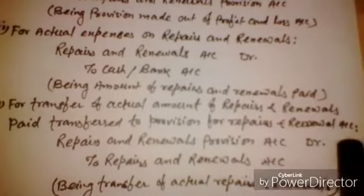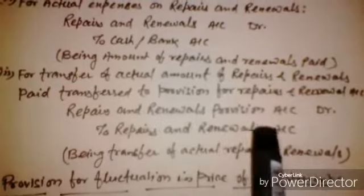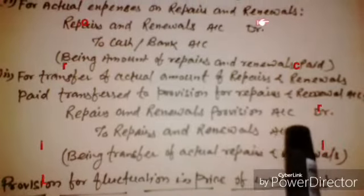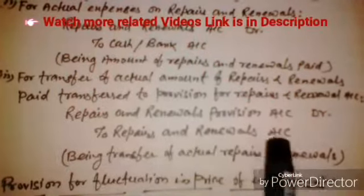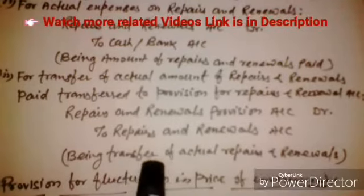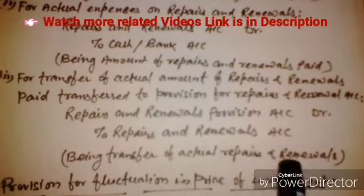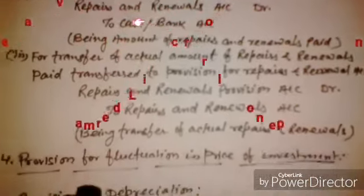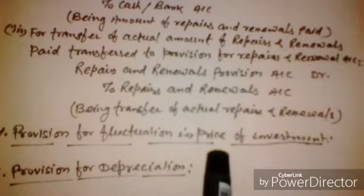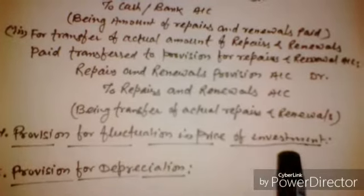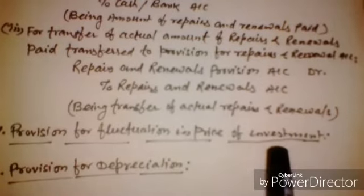The third journal entry is for the transfer of the actual amount of repairs and renewals paid to the provisions account: Repairs and Renewal Provision Account — Debit, to Repairs and Renewal Account — Credit, being the transfer of actual repairs and renewals.